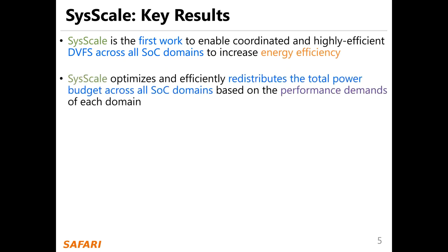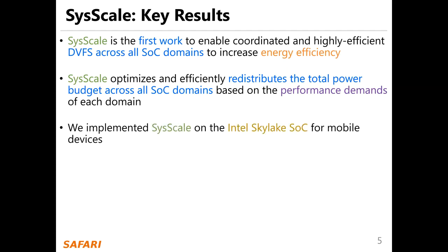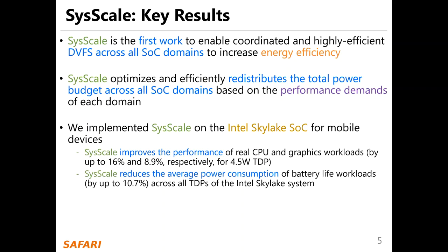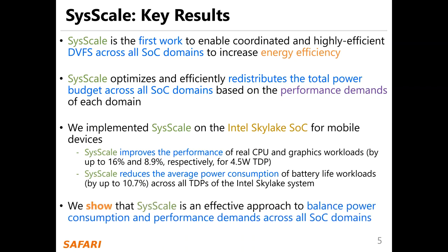Syscale optimizes and efficiently redistributes the total power budget across all SOC domains based on the performance demands of each domain. We implement Syscale on the Intel Skylake SOC for mobile devices. Syscale improves the performance of real CPU and graphics workloads by up to 16% and 8.9% respectively for a 4.5W thermal design power SOC. Syscale also reduces the average power consumption of battery life workloads by up to 10.7% across all TDPs of the Intel Skylake system. Syscale is an effective approach to balance power consumption and performance demands across all SOC domains.